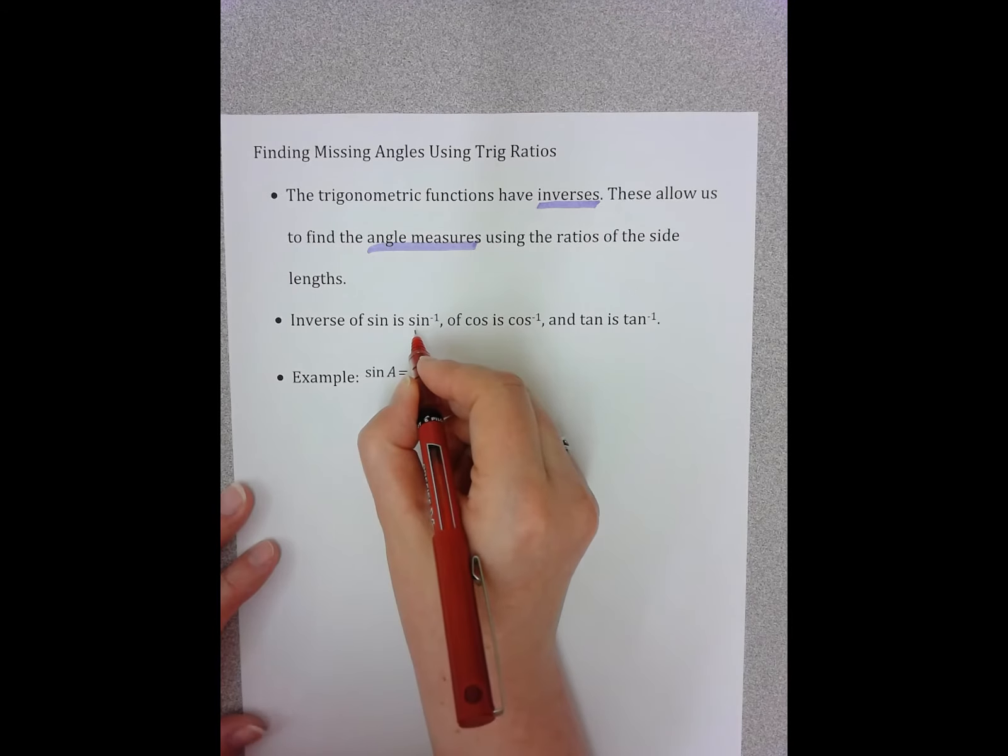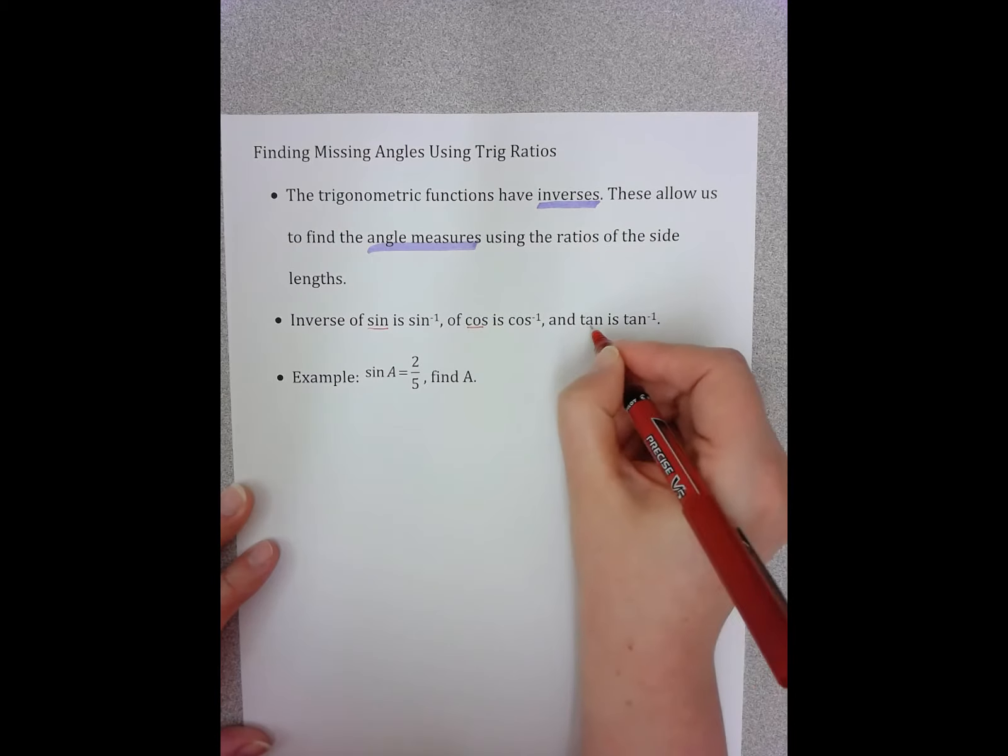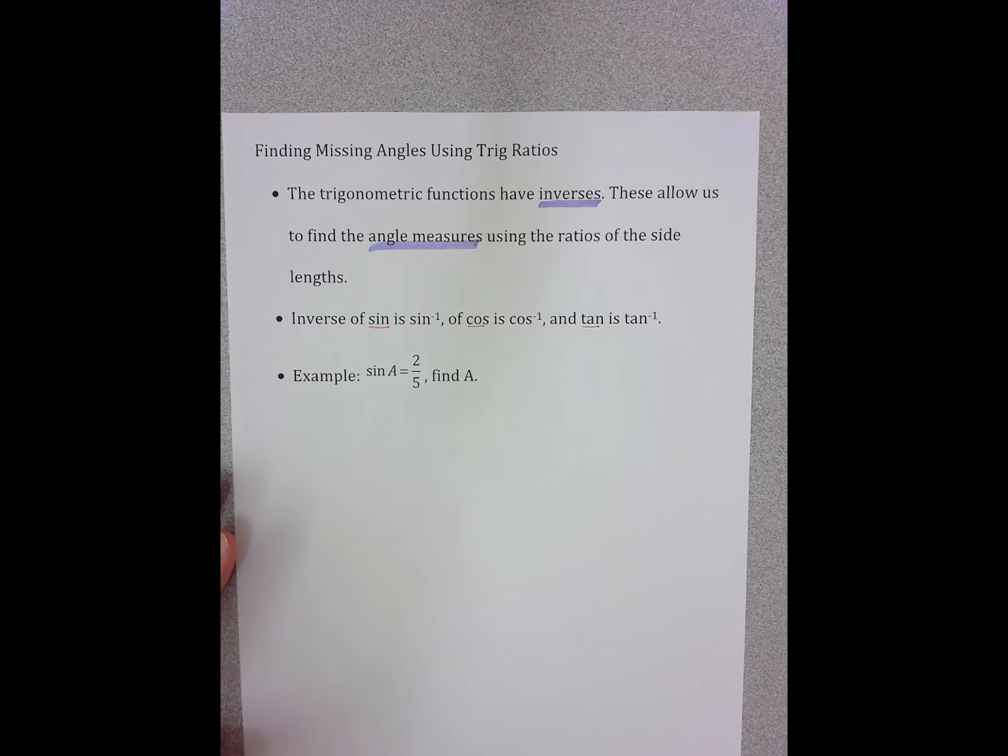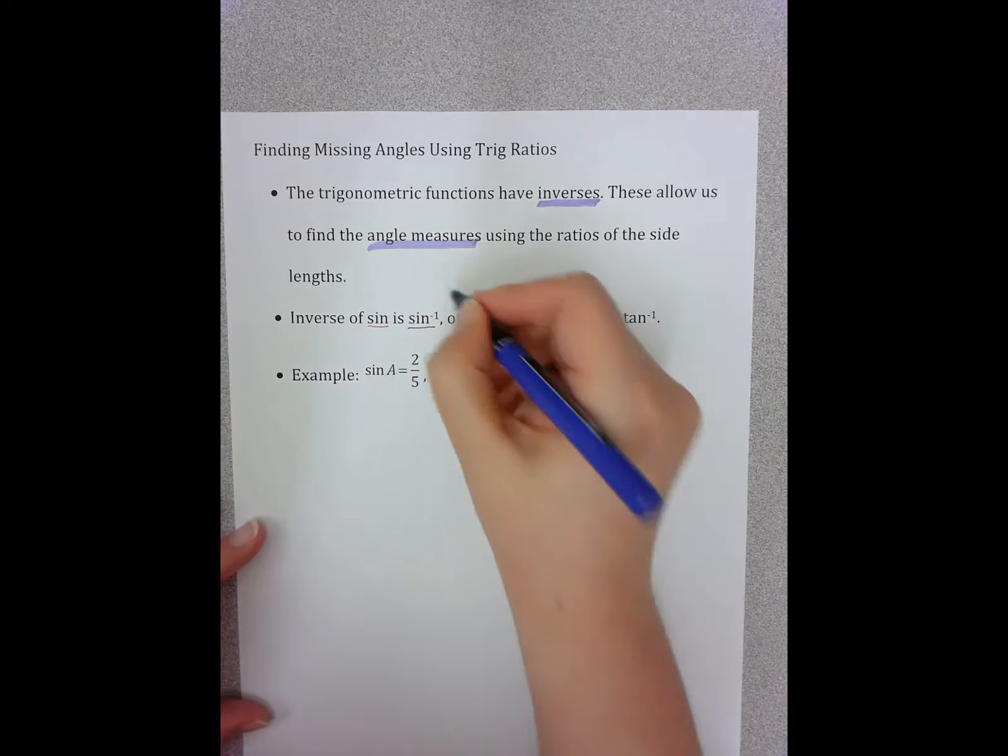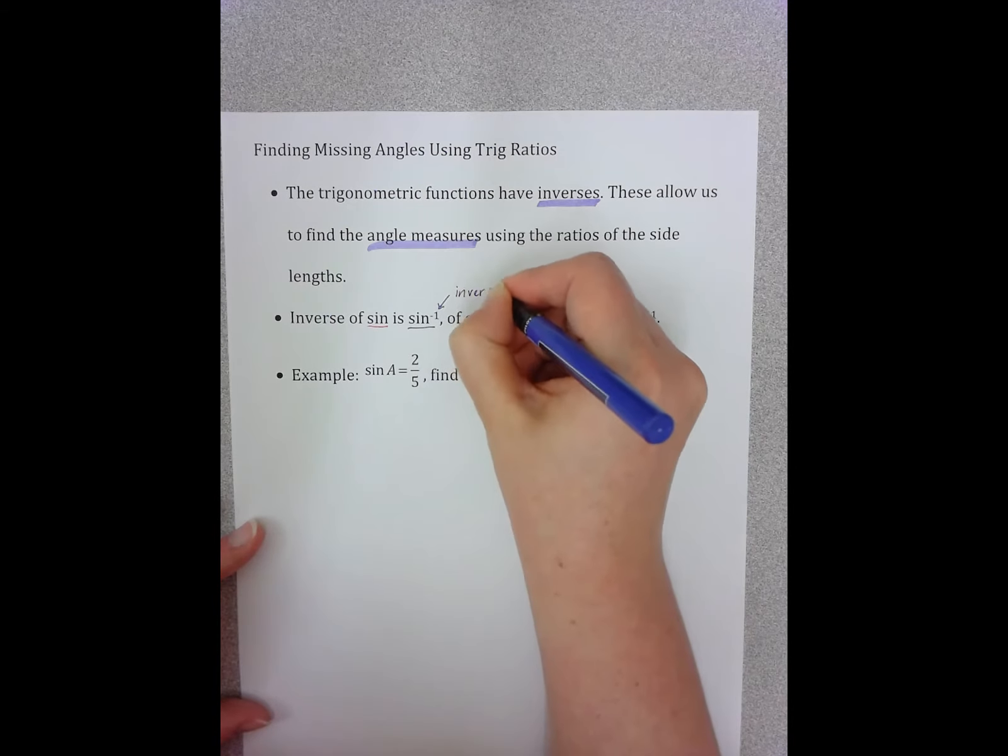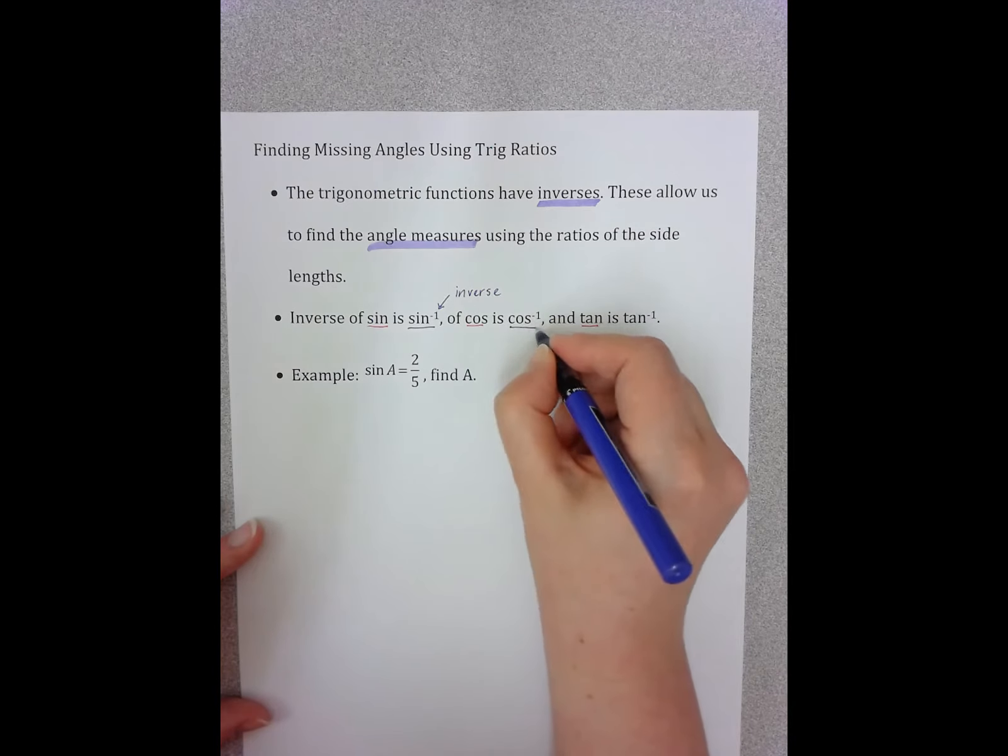As you're looking at your calculator, you'll see these lovely buttons. You'll see the sine, cosine, and tangent button. And then above them, if you're using a scientific calculator, usually it's the second button, or if you're using a graphing calculator, you have the inverse. And this symbol, this negative one, symbolizes inverse.